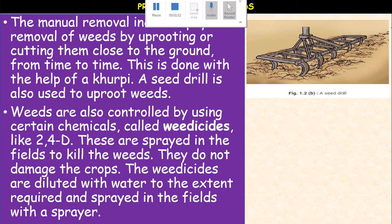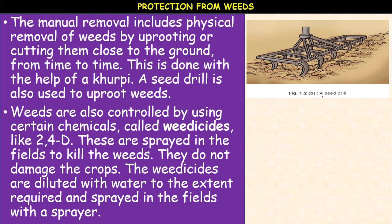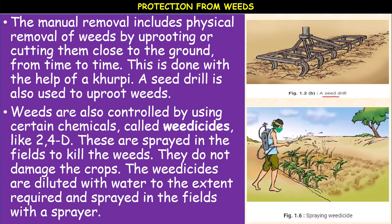A seed drill is also used to remove the weeds. The weeds are removed by pulling out by hand or by using a kurpa, which means trowel. It is also called a hoe or a rake, and is used to remove the weeds in small fields. Hand pulling or by means of a kurpa or hoe is the appropriate method in small fields.